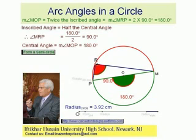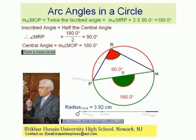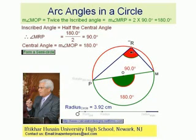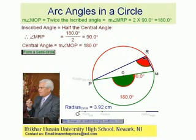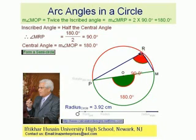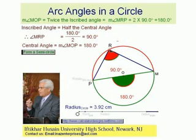And you can see, even if I move this point — wherever I take it — the angle inscribed in a semicircle will always be 90 degrees.